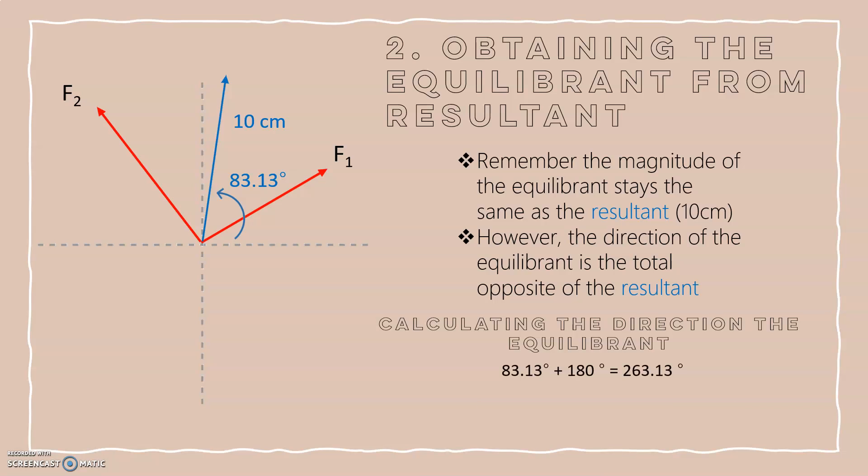So we are going to be doing our direction of our resultant, 83.13 degrees, plus 180 to get the total opposite of that, which will give us 263.13 degrees.